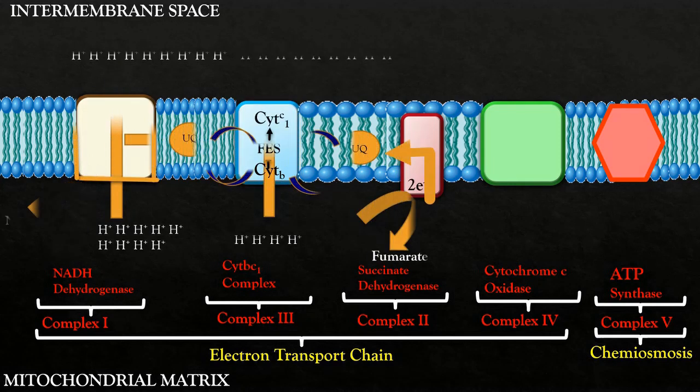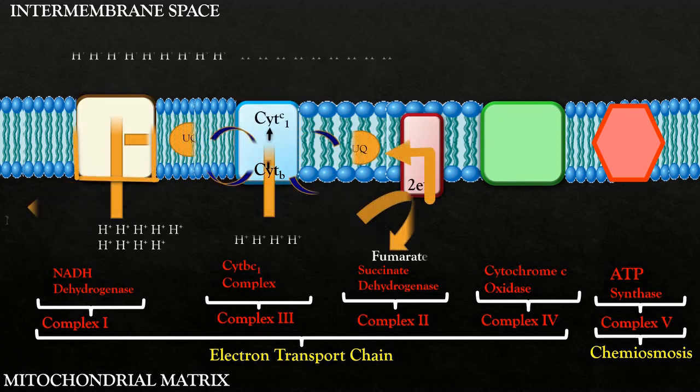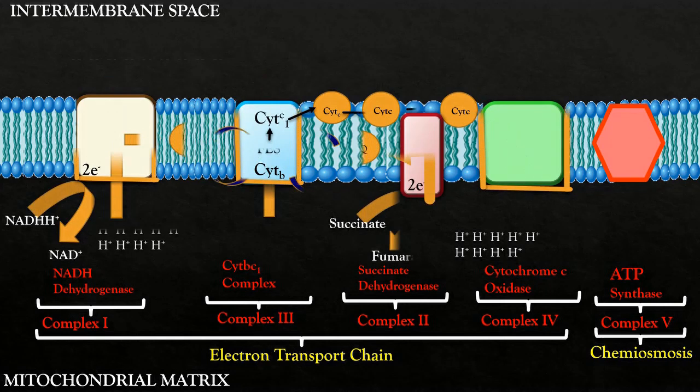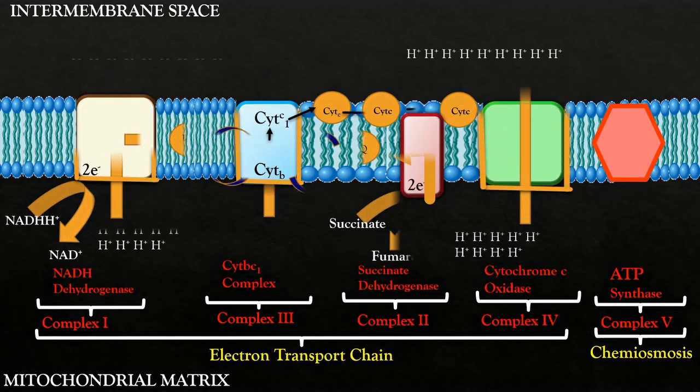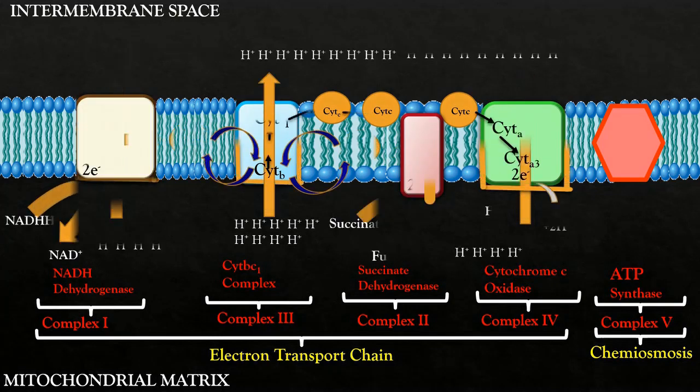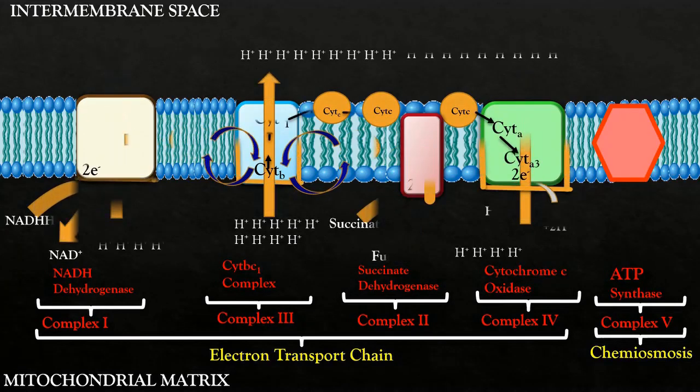Like coenzyme Q, cytochrome C is also a mobile molecule within the membrane. It transfers its electrons to complex 4 which is the final electron acceptor and is known as cytochrome C oxidase complex. On receiving the electrons, complex 4 also becomes supercharged. Just like complex 1 and 3, it can also pump protons from mitochondrial matrix to the inner membrane space. This results in building up a very strong proton gradient across the membrane.